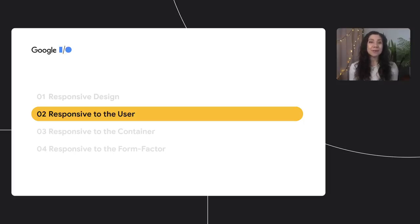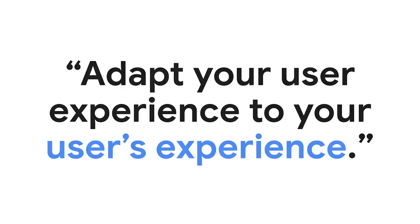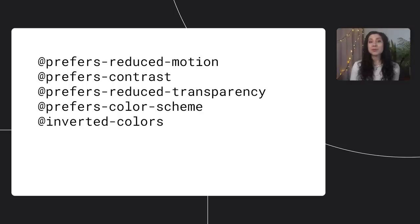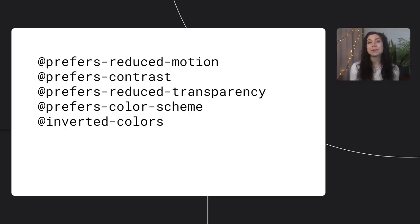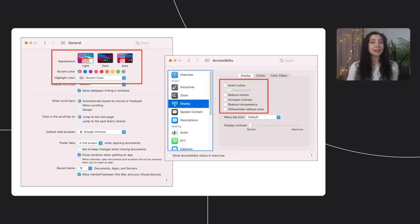Preference media queries allow you to adapt your user experiences to your users' experiences. These preference queries include prefers-reduced-motion, prefers-contrast, prefers-reduced-transparency, prefers-color-scheme, inverted-colors, and there are a few more experimental preference queries too. Preference queries help to build a more robust and personalized web experience, especially for those with accessibility needs, and they align with operating system preferences.